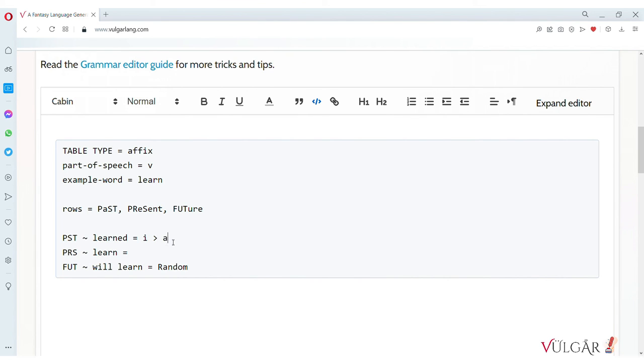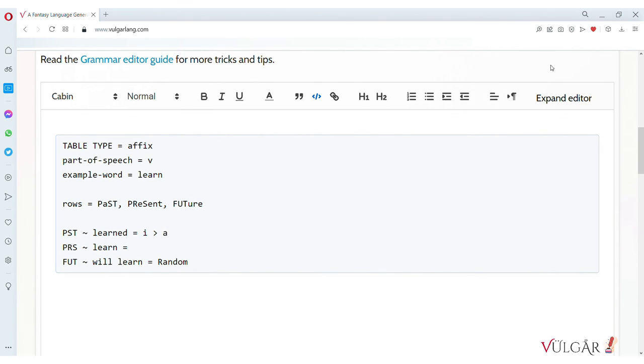sing and ring become sang and rang in the past tense. When encoding sound changes into affix rules, you may only want to change the first or last match in the word, not every match. Use double arrows for the last match and double forward arrows for the first match.